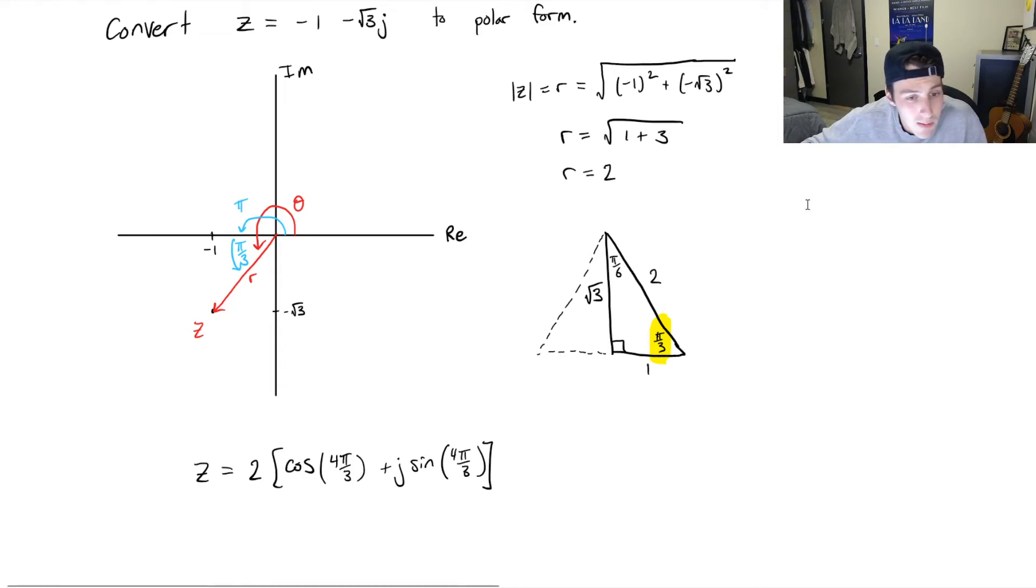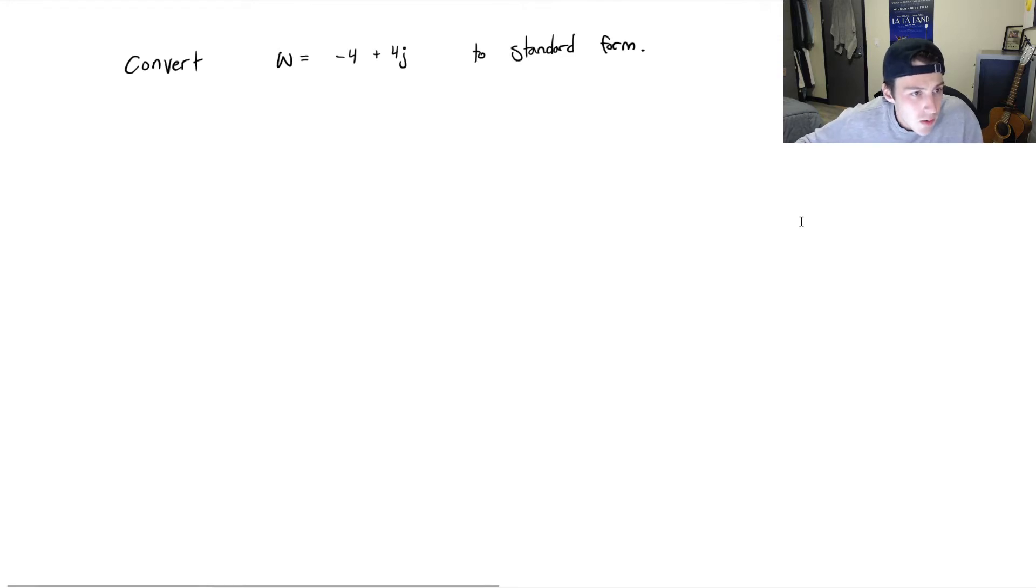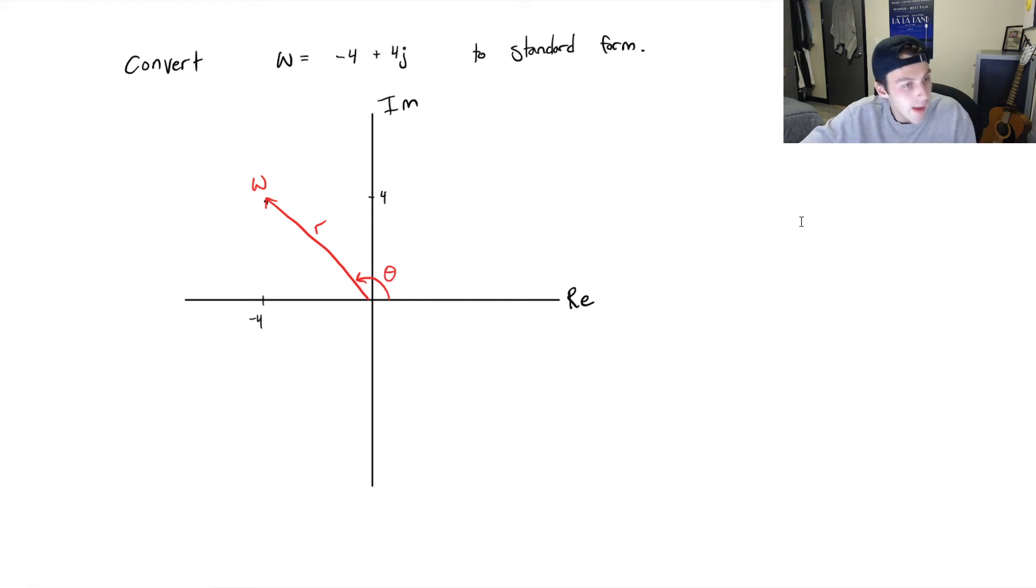I want to do one more example. Convert w equals negative 4 plus 4j into polar form. We're going to follow the exact same method that we did the last time. We're going to graph this complex number on an Argand plane. We've got our real axes, we've got our imaginary axes. Minus 4, and we've got positive 4j. Something like this. That's w. Remember, our length is r, pretty easy to deduce. And our argument in this case, positive direction of the real axes up until the vector, that's going to be our theta.